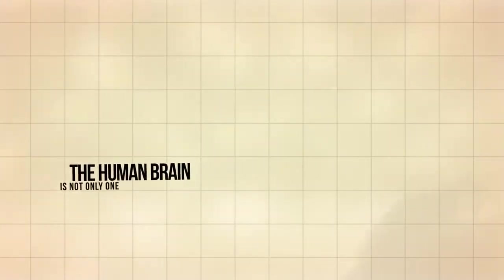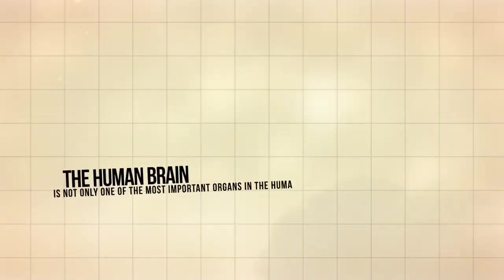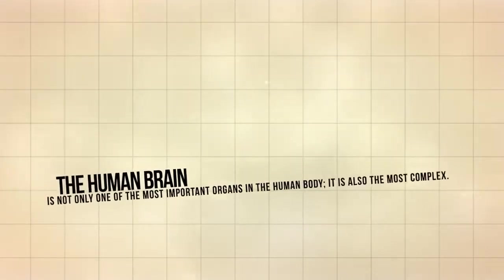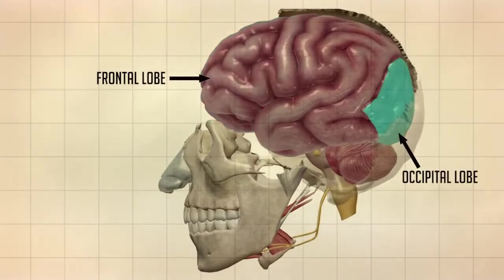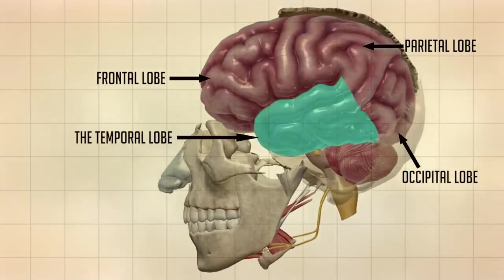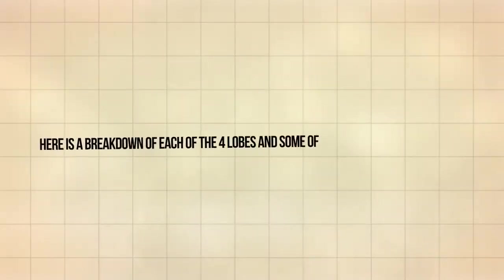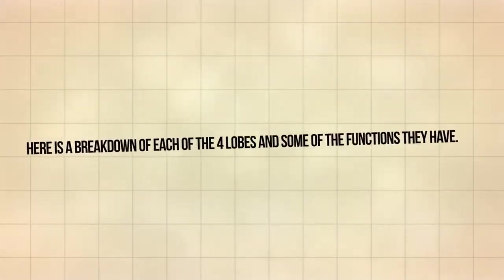The human brain is not only one of the most important organs in the human body, it is also the most complex. The brain is divided into four major sections known as lobes. Here is a breakdown of each of the four lobes and some of the functions they have.